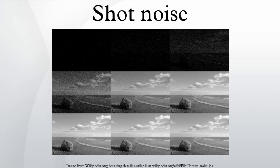It is known that in a statistical experiment such as tossing a fair coin and counting the occurrences of heads and tails, the numbers of heads and tails after a great many throws will differ by only a tiny percentage, while after only a few throws, outcomes with a significant excess of heads over tails or vice versa are common. If an experiment with a few throws is repeated over and over, the outcomes will fluctuate a lot.